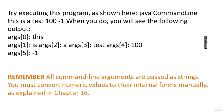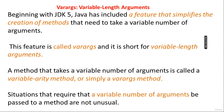The last topic is variable length arguments, or varargs. Beginning with JDK 5, Java included a feature that simplifies the creation of methods that need to take a variable number of arguments. This feature is called varargs — short for variable length arguments. A method that takes a variable number of arguments is called a variable arity method, or simply a varargs method.